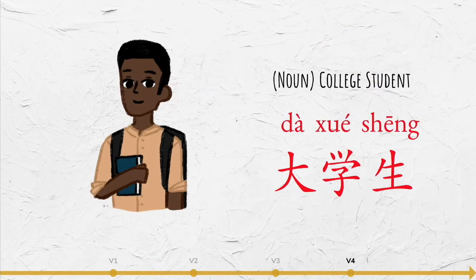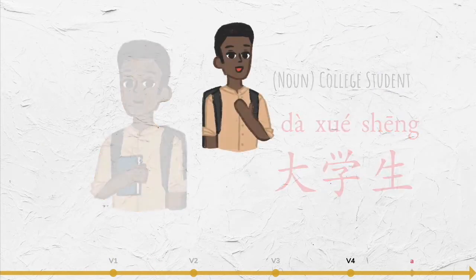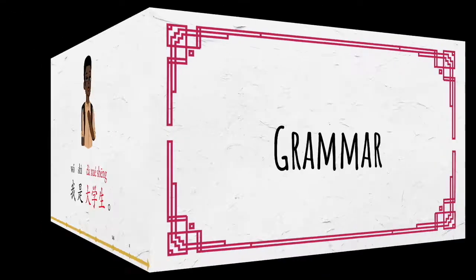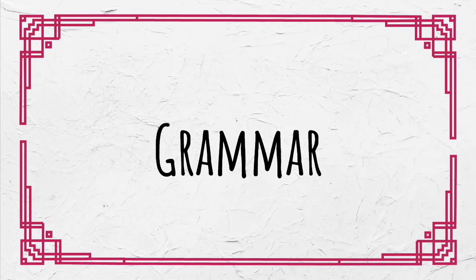大学生 (college student). For example: 我是大学生 (I am a college student). Now let's move on to the grammar.